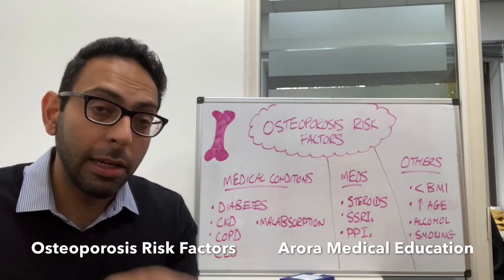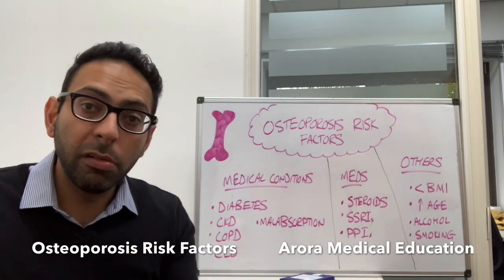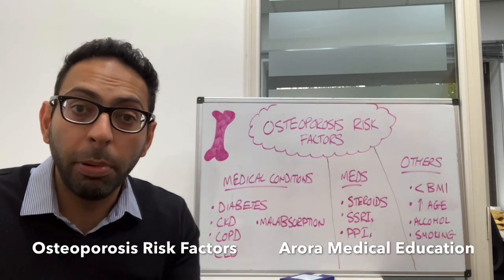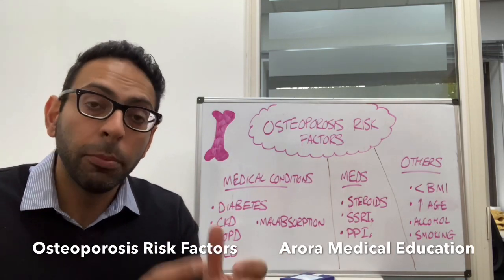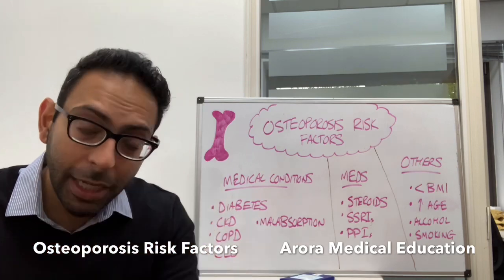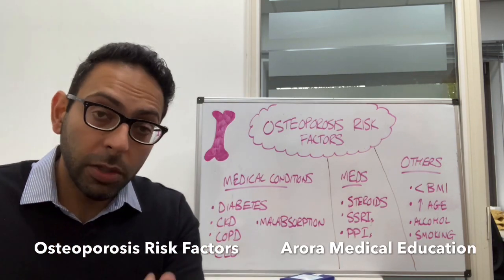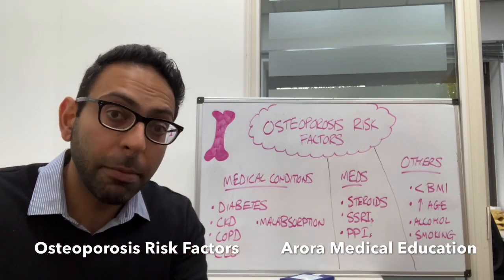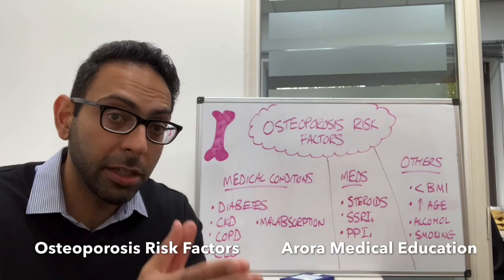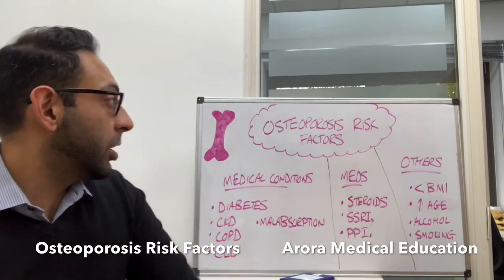So, osteoporosis — low bone mass, structural deterioration of bone tissue — which ultimately leads to increased fragility and therefore increased risk of fractures. So what are the things to think about as a risk factor to this underlying situation?